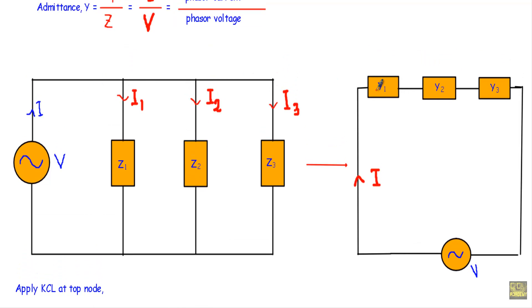Now let me derive the relation between impedance and admittance for a parallel circuit. Let's say we have three impedances Z1, Z2, and Z3 connected at a common point on each side, so they are connected in parallel.